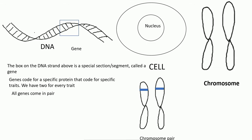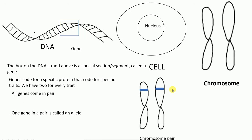For example, on a homologous chromosome pair, both chromosomes have a gene that codes for the protein expressing height. Each of these individual genes in the pair is called an allele. So an allele is one gene in a pair on homologous chromosomes that codes for a specific trait.